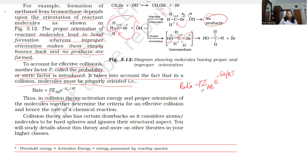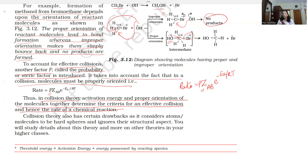In collision theory, activation energy and proper orientation of the molecules together determine the criteria for an effective collision, and hence the rate of a chemical reaction. If the collision has sufficient kinetic energy and the molecules are properly oriented, the collision is effective and product formation occurs.